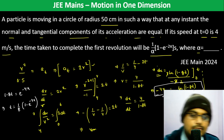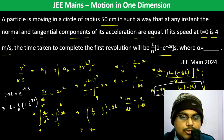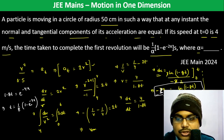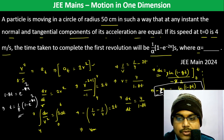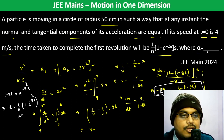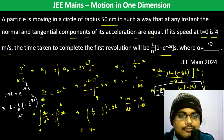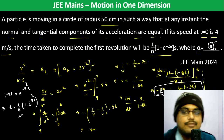Correction: it's 2π, not 4π. So the final answer uses 2π, and alpha becomes 8.